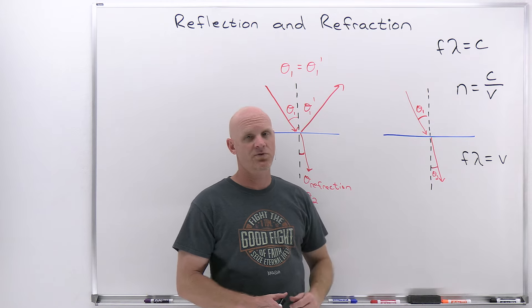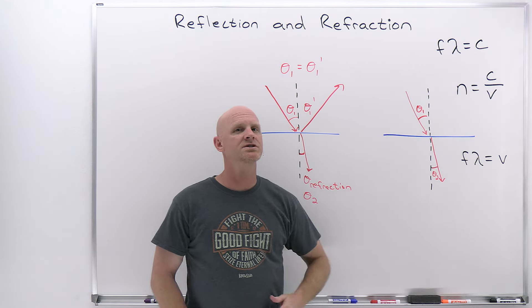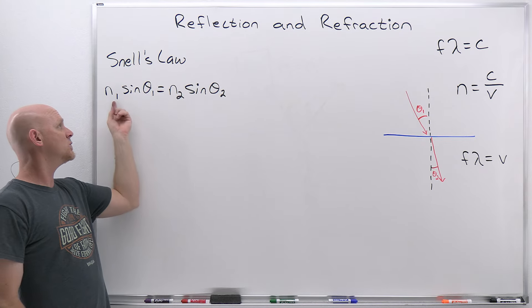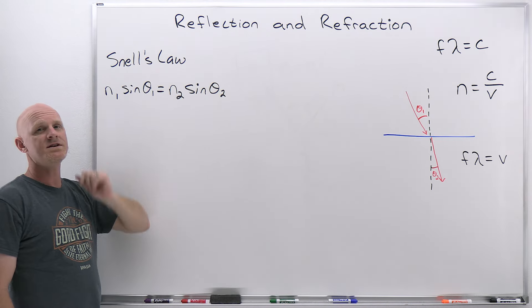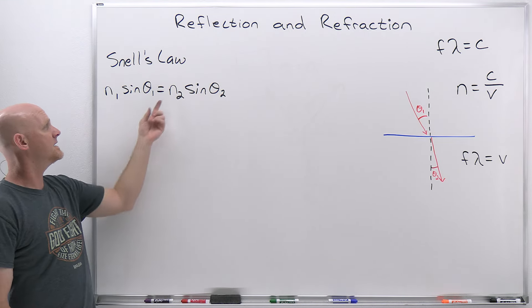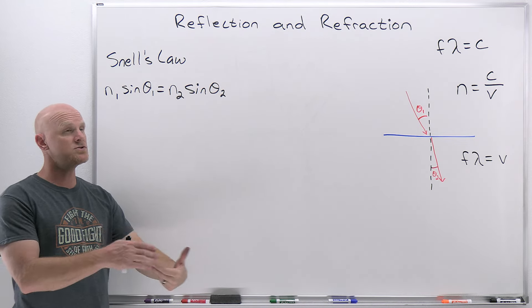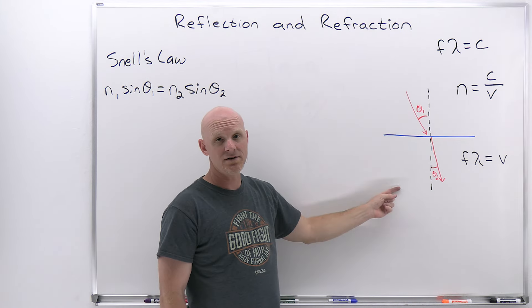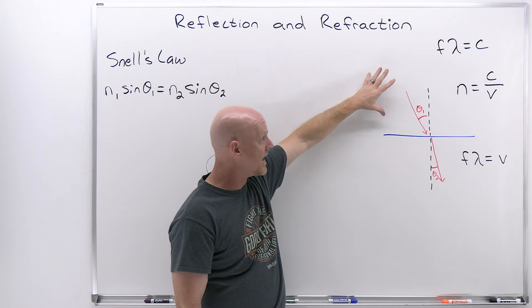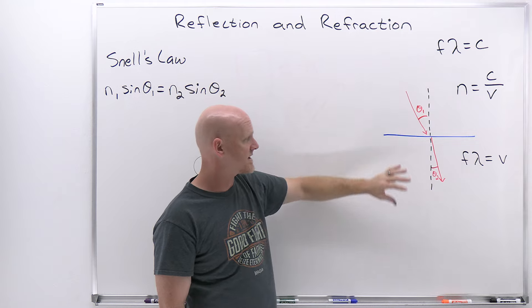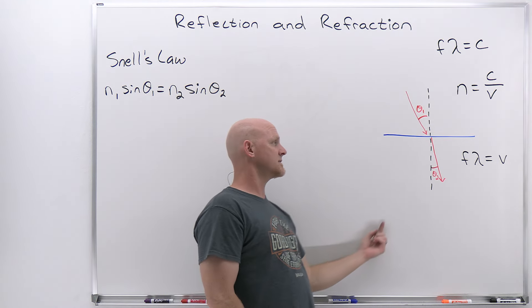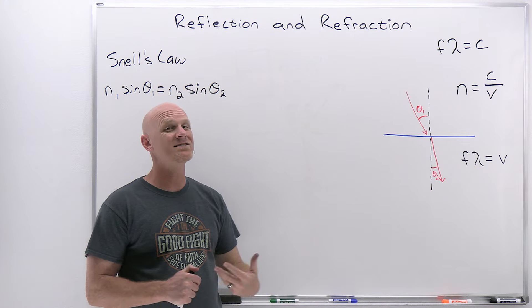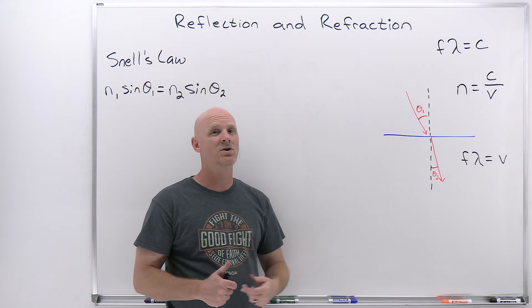We can predict the angle of refraction using Snell's Law of refraction: N1 sinθ1 = N2 sinθ2, where N1 is the index of refraction of the medium the light is coming from, N2 is the index of refraction of the medium the light is entering, θ1 is the angle of incidence, and θ2 is the angle of refraction. Wherever the light begins — the medium of origin — corresponds to N1, and wherever it is transmitted to corresponds to N2.